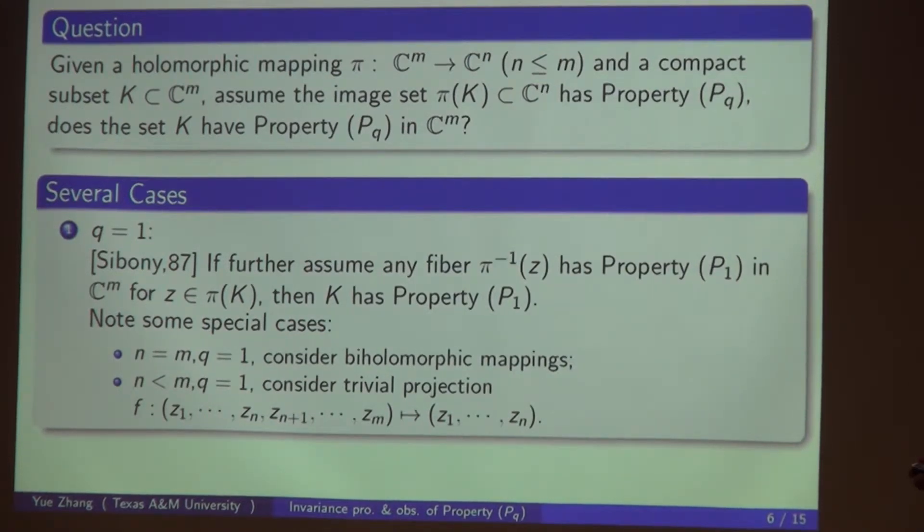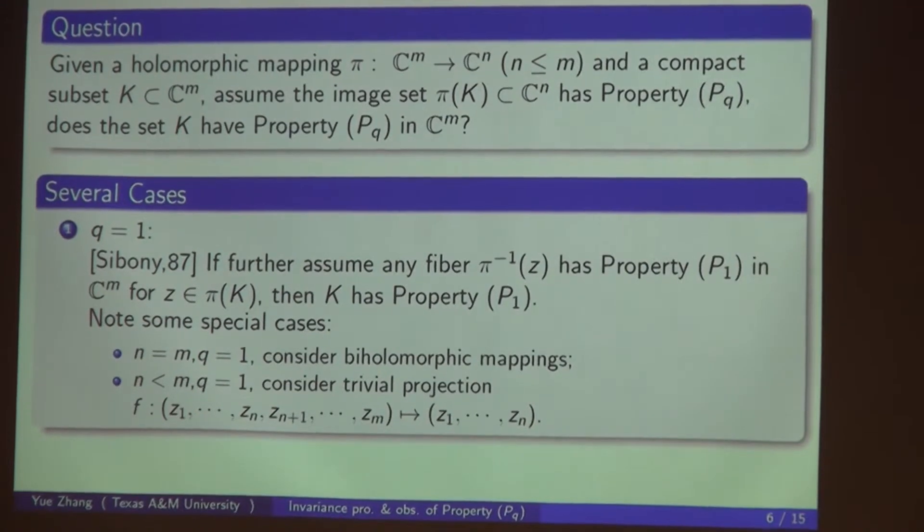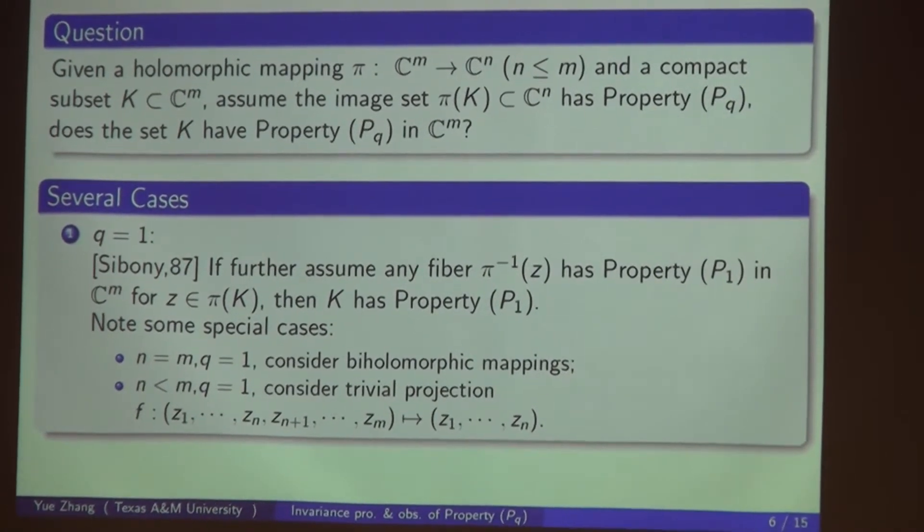The second special case is m greater than n, q equal to 1. If you consider pi to be the trivial projection, namely projecting the first n coordinates, you also don't have to assume anything on the fiber. If you assume the image set has property P_1, then the original set will automatically have property P_1.